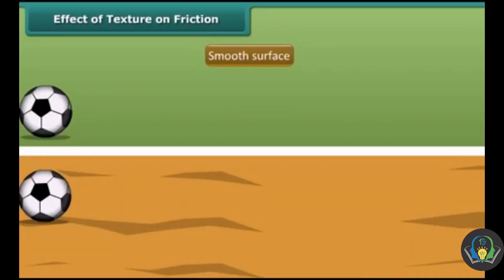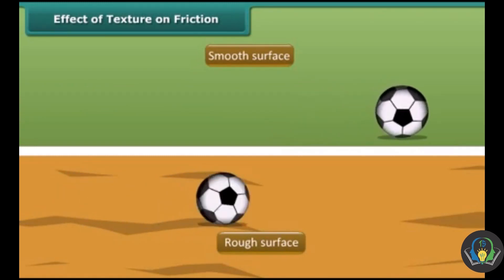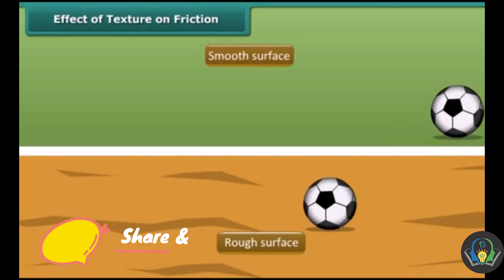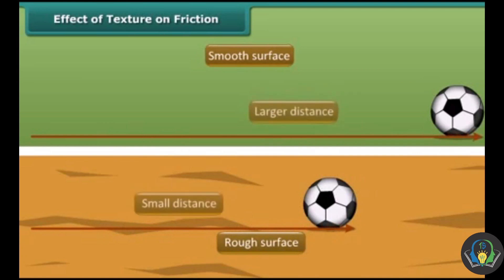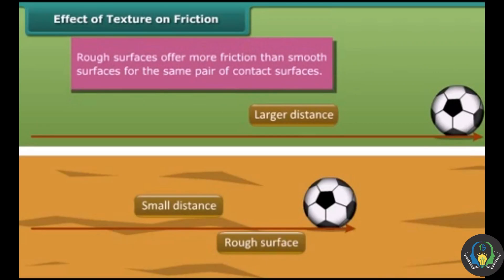In the figure, a ball is rolled on a smooth surface and another similar ball is on a rough surface. Both balls start rolling on different surfaces at the same time, but one covers more distance than the other. The ball rolling on the smooth surface travels a larger distance than the ball rolling on the rough surface.